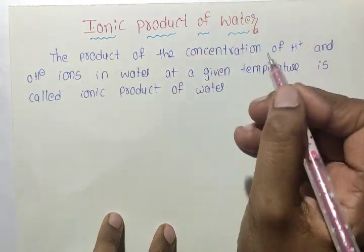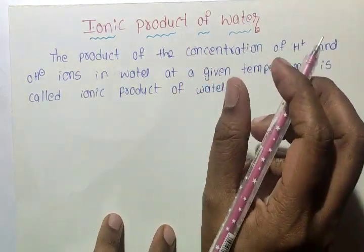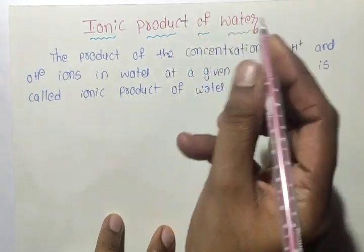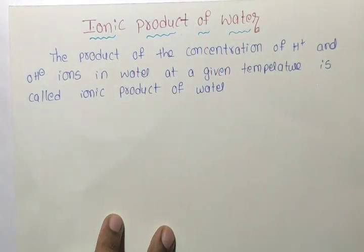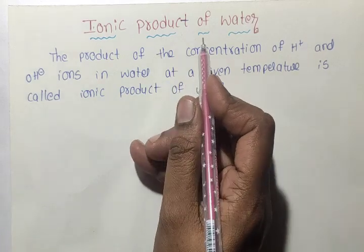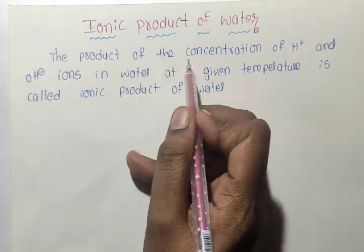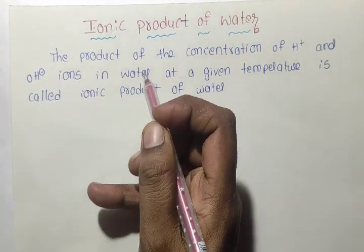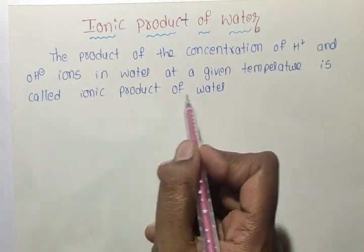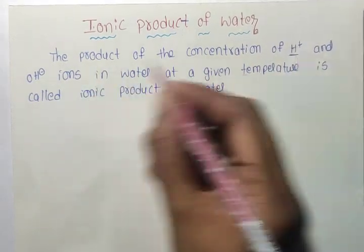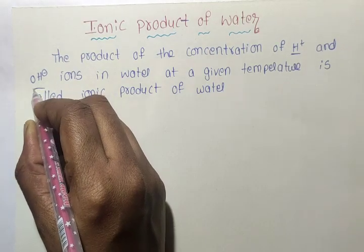Ionic Product of Water, also known as the Ionization Constant of Water. The ionic product of water is the most popular term. It refers to the product of the concentration of H⁺ and OH⁻ ions in water at a given temperature. This is called the Ionic Product of Water.